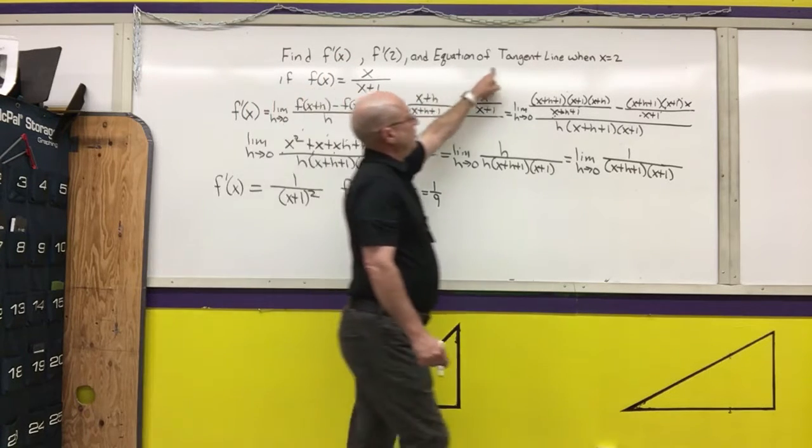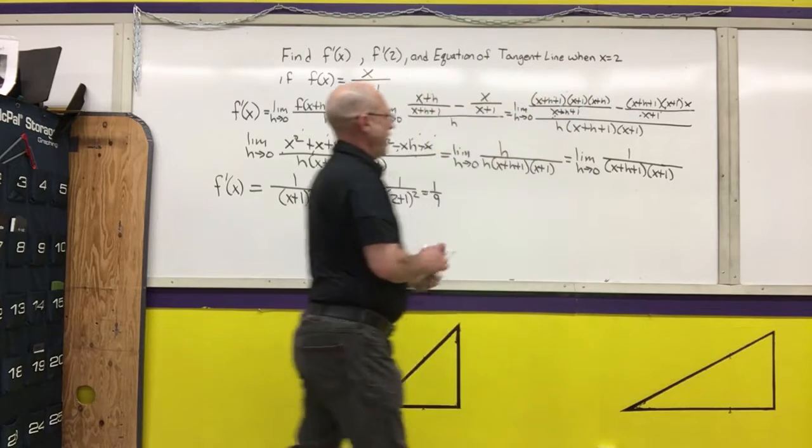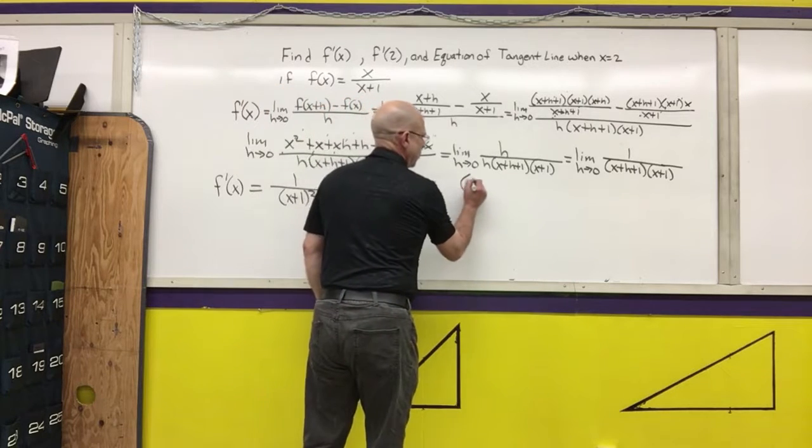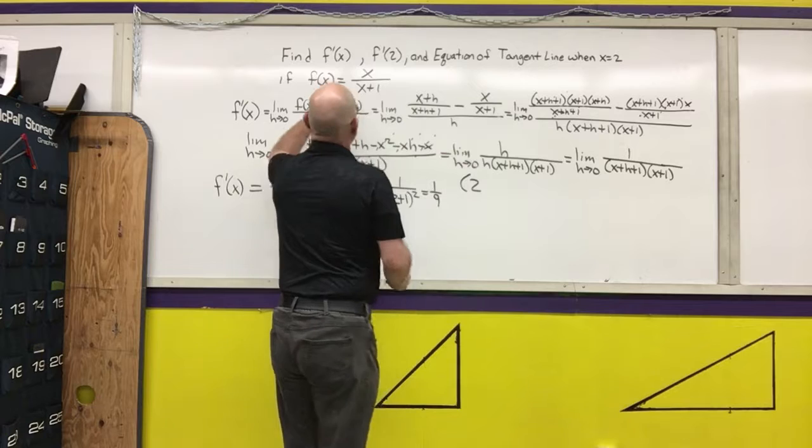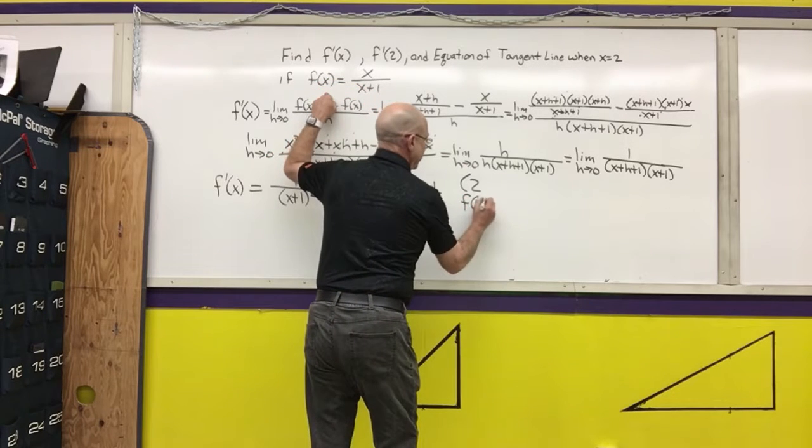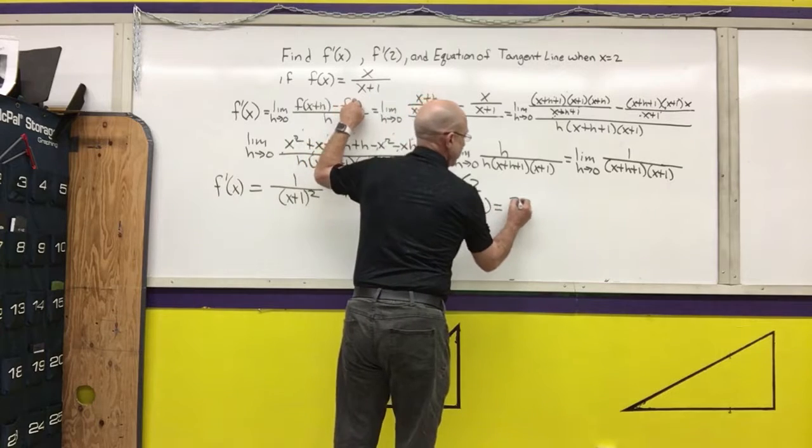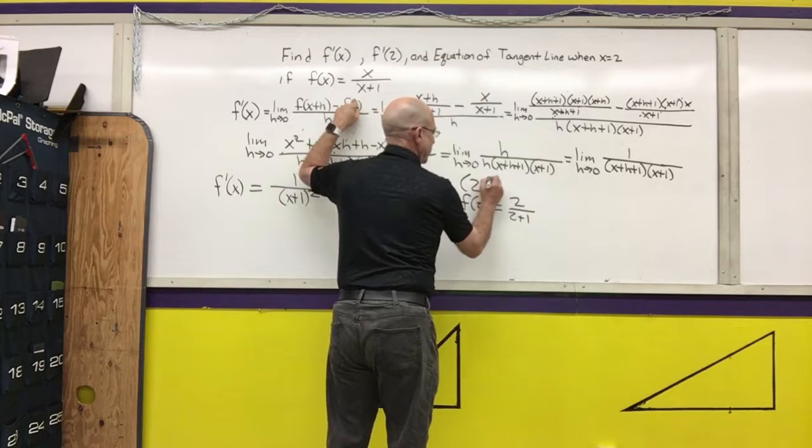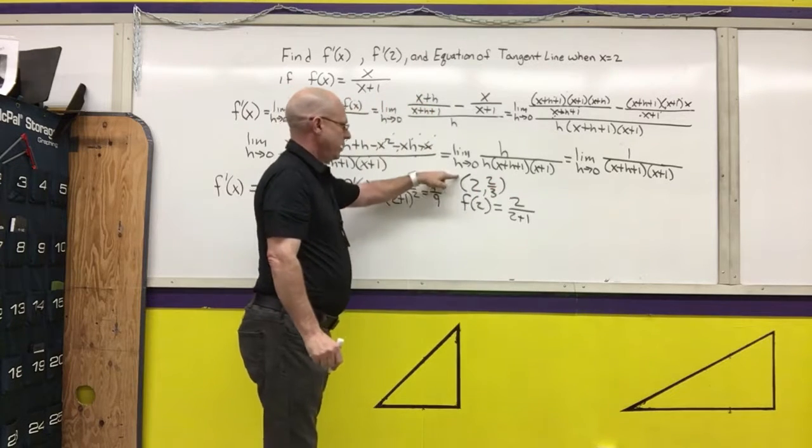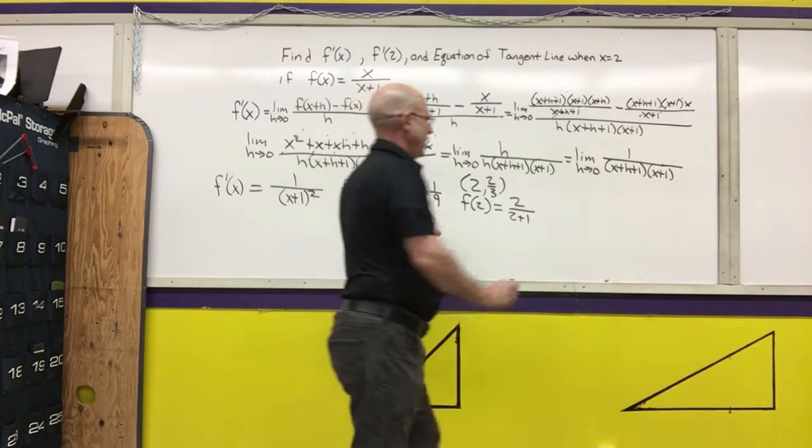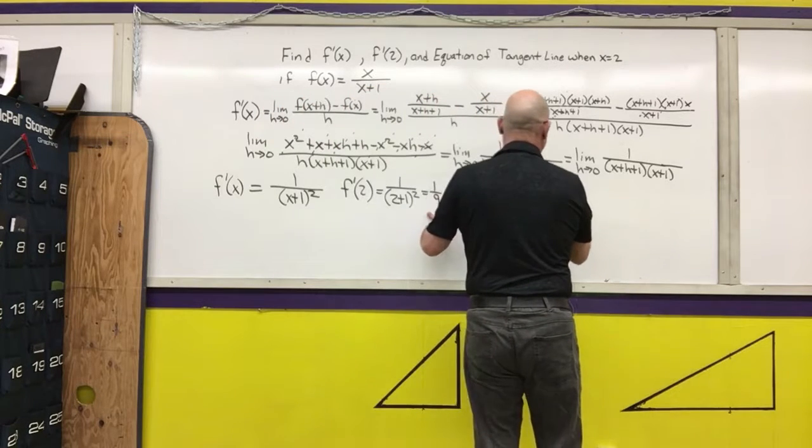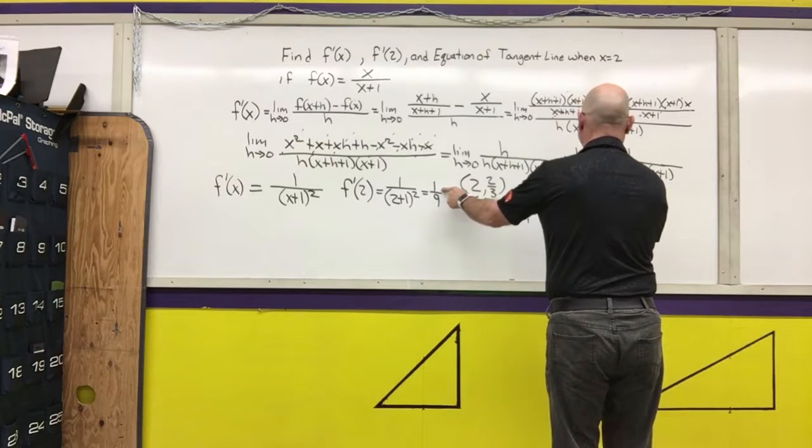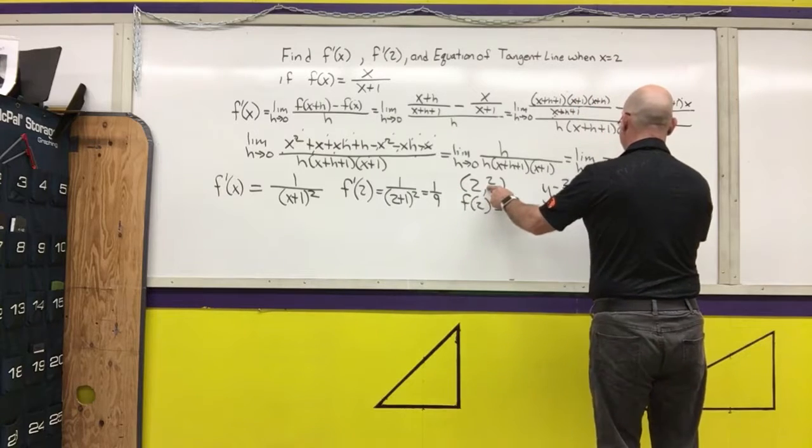Now what I want to do is write the equation of the tangent line when x equals 2. In order to do that, I need to know the actual y coordinate of the point. So when the x coordinate is 2, the y coordinate, or f of 2, is equal to 2 over 2 plus 1, which is 2/3. I now have a point, I have a slope, I can write the equation for the line. y minus 2/3 equals 1/9 times x minus 2.